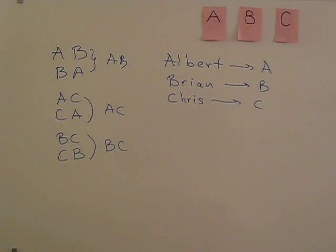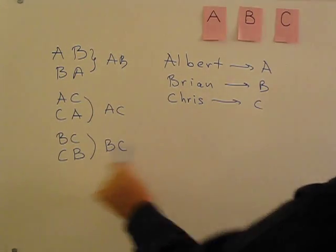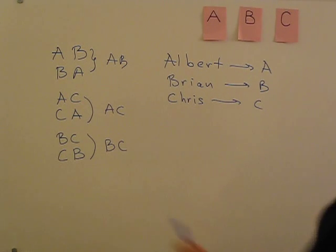So this second example is a combination example. In permutation, there are six ways, but in combination, there are three ways. So combination always produces fewer alternatives than permutations do.